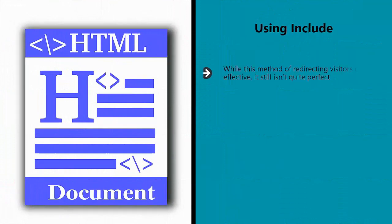Using include. While this method of redirecting visitors can be effective, it still isn't quite perfect. You still have two different types of webpages, which could potentially confuse results. The URL in the address bar will be different, for example, which could result in action from Google — more on this in a bit — and which could confuse your users. Another option then is to use an include file.